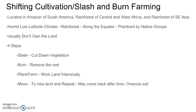Let's start with shifting cultivation, which is also called slash and burn farming. This is located in the Amazon of South America, the rainforest of Central and West Africa, and the rainforest of Southeast Asia — in the humid low latitude climate zone, specifically along the equator. It's typically practiced by indigenous groups who usually don't own the land they're farming, which puts them in conflict with landowners and the government.